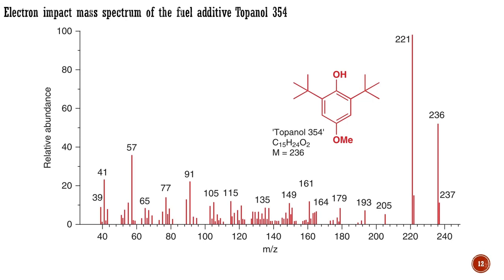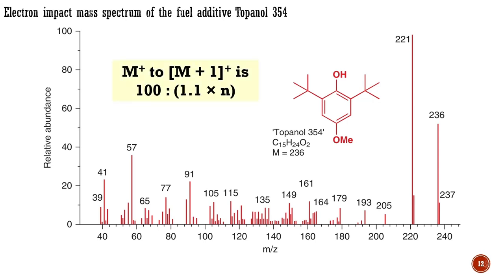The exact height of these peaks is useful as an indication of the number of carbon atoms in the molecule. Each carbon has a 1.1% chance of being carbon-13 rather than carbon-12, so the more carbon atoms there are, the bigger this chance becomes. If there are N carbon atoms in a molecular ion, the ratio of N+ to (N+1)+ is calculated by a specific formula. For example, the fuel additive topanol-354 with 15 carbons has a 16.5% chance there will be one carbon-13 atom in the molecule, and you can clearly see the sizable N+1 peak at 237.